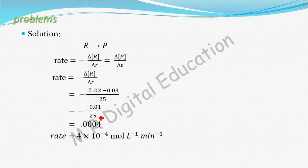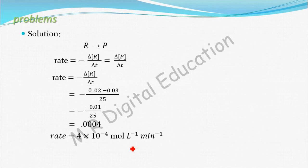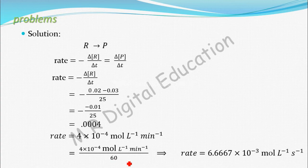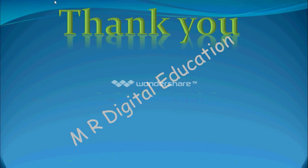Why per minute? Because the time given was in minutes, so the unit is mol per liter per minute. Now to convert to seconds, divide by 60. When you divide 4 × 10⁻⁴ by 60 you get 6.667 × 10⁻⁶ mol per liter per second. This is the average rate. This is how you calculate it.